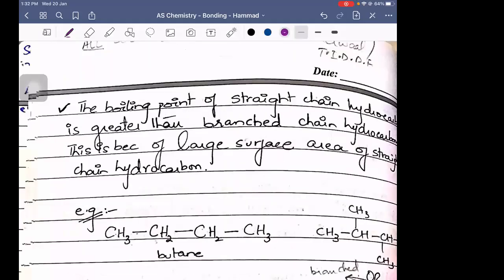The boiling point of a straight chain hydrocarbon will always be greater than a branched chain. Reason being, in the straight chain, the electron cloud is forming.